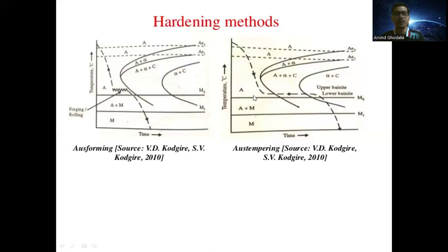After the initial sudden cooling, the temperature is held constant for a long period of time before the martensitic start temperature — specifically in the upper bainite or lower bainite region. In the lower bainite region, tempering is carried out for a long period of time. The austenite transforms to austenite plus alpha plus carbide (lower bainite), and the temperature remains constant just before the start of martensitic transformation.